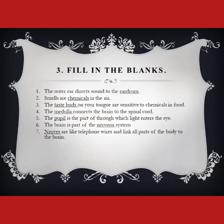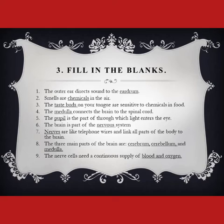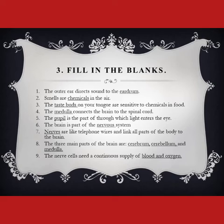The three main parts of the brain — as you know — are the cerebrum, cerebellum, and medulla. The last blank: nerve cells need a continuous supply of — food and oxygen are required, but food travels through the blood, so the answer is blood and oxygen.